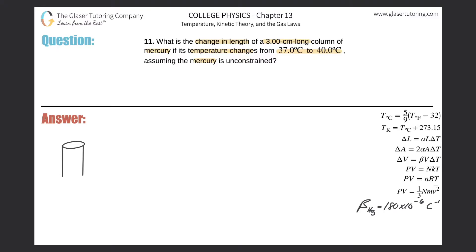Here's the initial height of the mercury — I'm going to fill this in with yellow. They tell us that the initial height of mercury in this column is three centimeters, so this is 3.00 centimeters. Now, when this mercury is subjected to a temperature change, the mercury will experience a volume expansion.